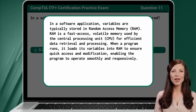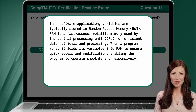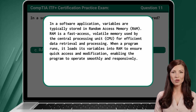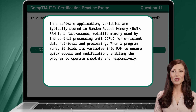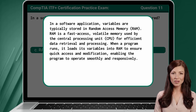RAM is a fast-access, volatile memory used by the central processing unit for efficient data retrieval and processing. When a program runs, it loads its variables into RAM to ensure quick access and modification, enabling the program to operate smoothly and responsively.